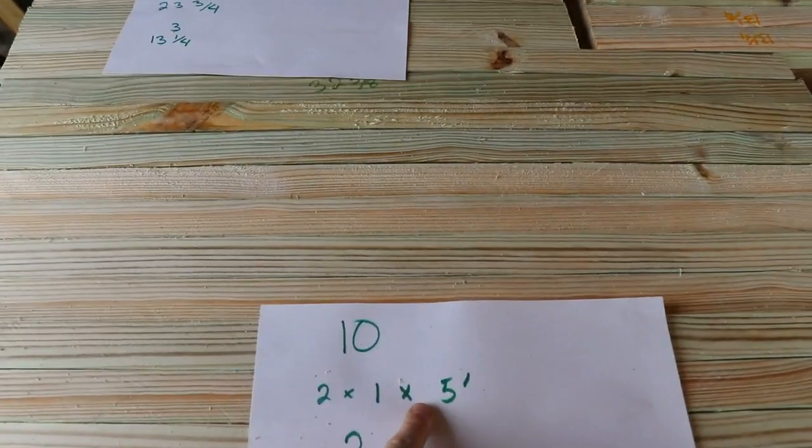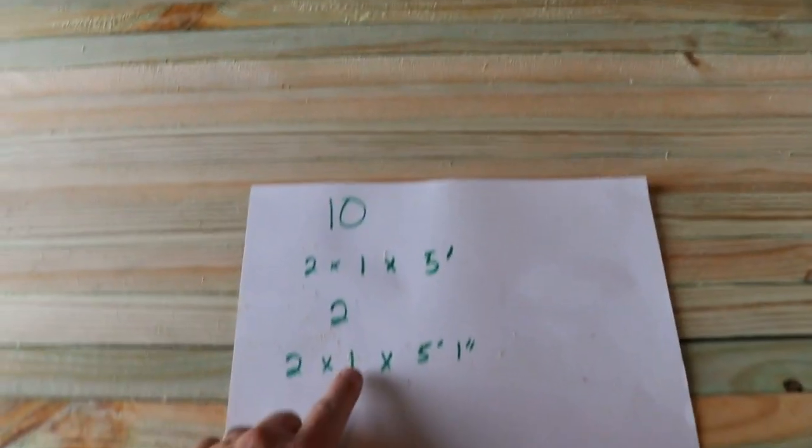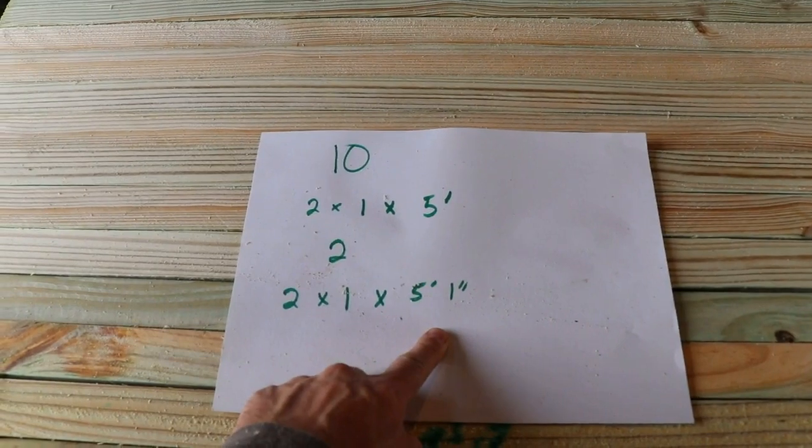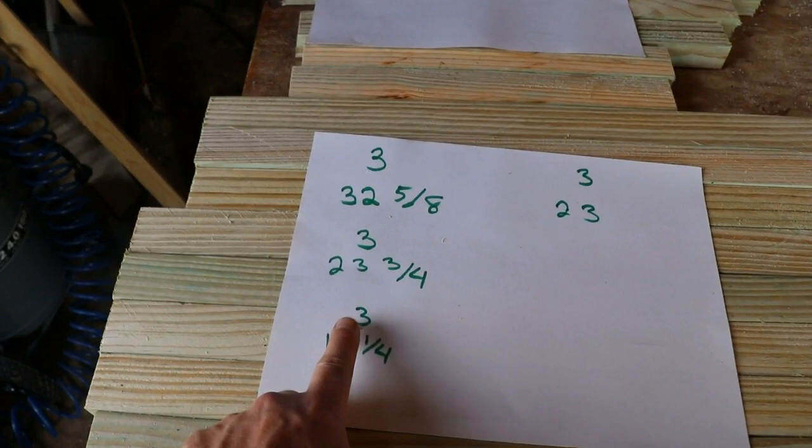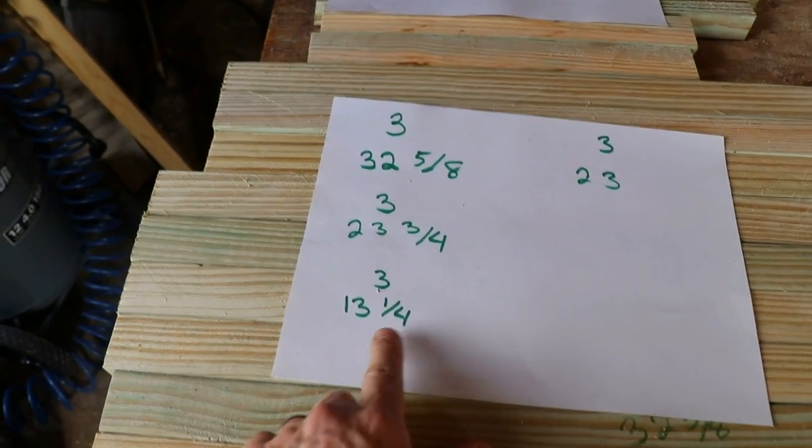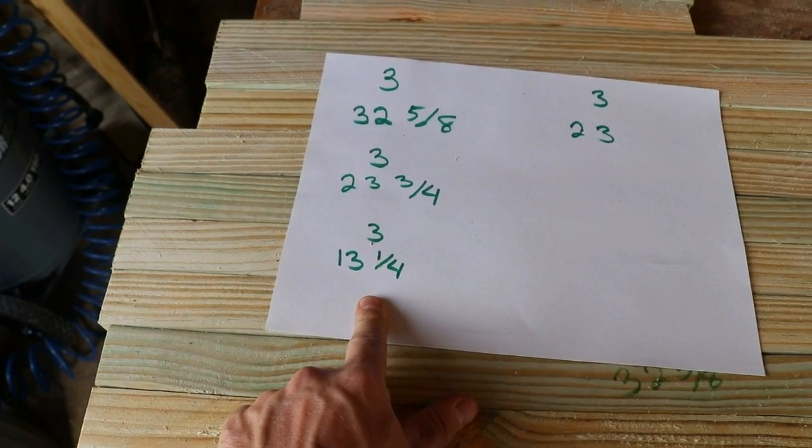We need ten five-foot long ones, then two five-foot one-inch ones, and then you're going to need three at 32 and 5/8, three at 23 and 3/4, three at 13 and 1/4.